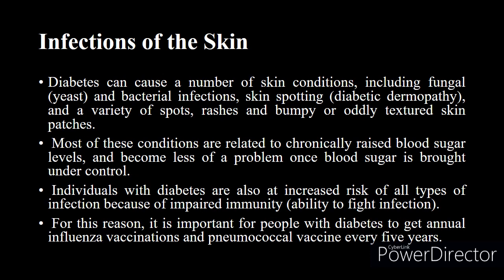The next complication is skin infections. Diabetes can cause a number of skin conditions including fungal and bacterial infections, skin spotting, and a variety of spots, rashes, and oddly textured skin patches. Most of these are related to chronically raised blood sugar levels and become less of a problem once blood sugar is brought under control. Individuals with diabetes are also at increased risk of all types of infection because immunity — the ability to fight infection — falls. For this reason, it is important for people with diabetes to get annual vaccinations.